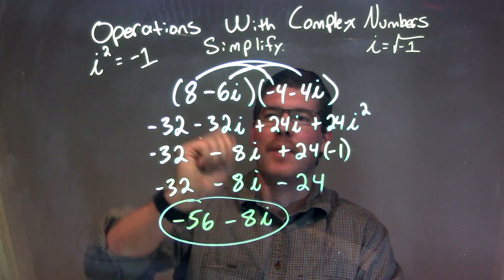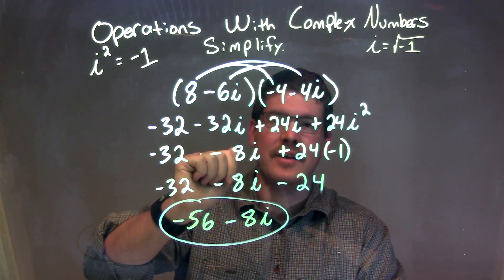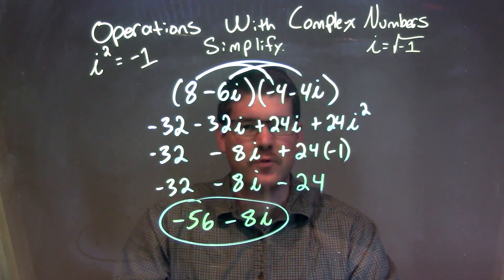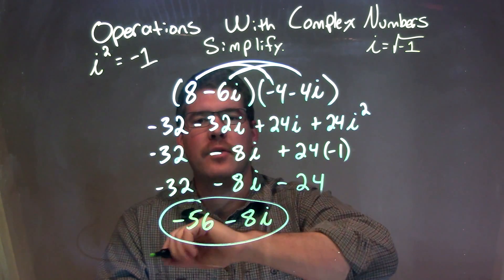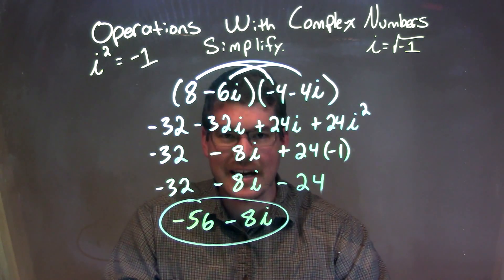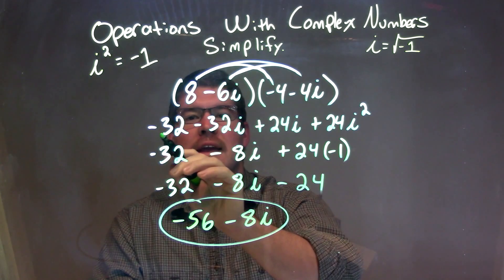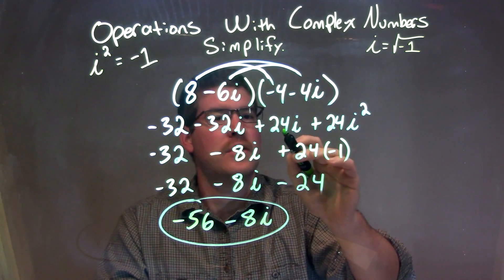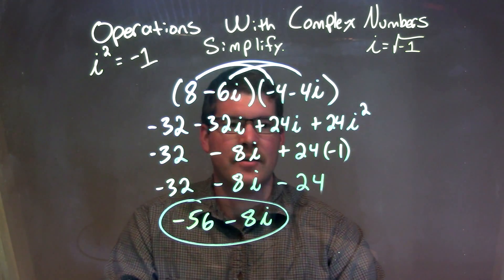So to recap, 8 minus 6i times negative 4 minus 4i. All parts of my first parenthesis are multiplied by all parts of my second parenthesis. And so we got negative 32 minus 32i plus 24i plus 24i squared.